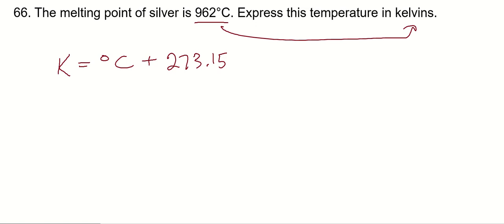Now, looking at the measurement given, which is the melting point of silver, has precision to the ones. We're not going to use any of that in our equation, so we can simply add 962 plus 273.